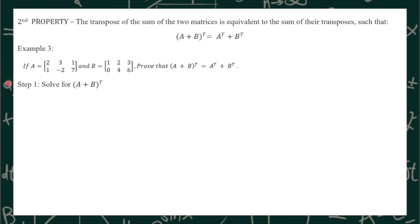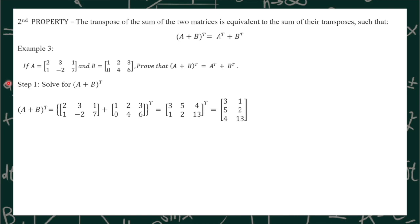For step 1, we need to solve for the transpose of quantity A plus B. We have to add A plus B first: 2+1=3, 3+2=5, 1+3=4, 1+0=1, -2+4=2, 7+6=13. After that, we transpose this matrix. Row 1 is [3, 5, 4] and if we transpose it, it becomes a column. Row 2 is [1, 2, 13] and if we transpose it, it becomes the column [1, 2, 13].